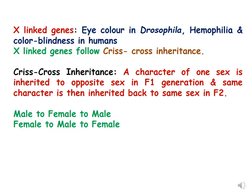X-linked genes include eye color in Drosophila. In humans, hemophilia and colorblindness — the genes for these two diseases — are present on the X chromosome. These are X-linked diseases and they follow criss-cross inheritance: a character of one sex is inherited to the opposite sex in F1, and the same character is then inherited back to the original sex in F2. The character goes from male to female and back to male, and similarly from female to male and back to female.